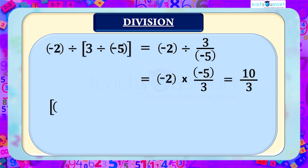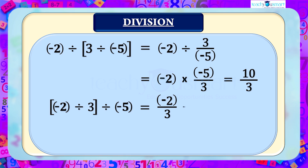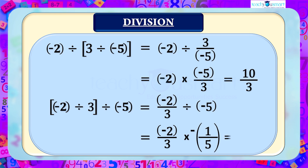And second: (minus 2 divided by 3) divided by minus 5 equals (minus 2 by 3) divided by minus 5 equals (minus 2 by 3) multiplied by (minus 1 by 5) equals 2 by 15.